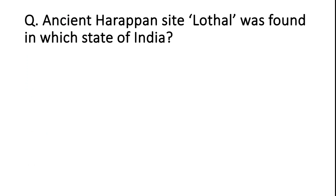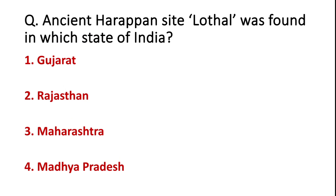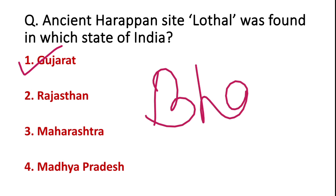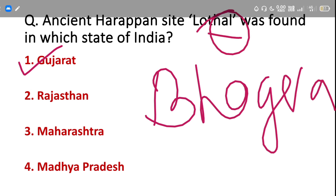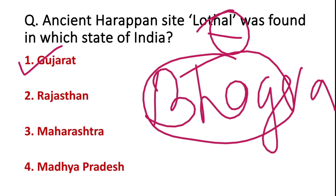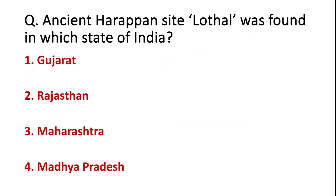The ancient Harappan site Lothal was found in which state of India? Options: Gujarat, Rajasthan, Maharashtra, or Madhya Pradesh. The correct answer is Gujarat. Lothal is located in Gujarat. A related frequently asked question is which river Lothal is found near — the answer is the Bhogwa river. You can remember this with the trick: 'Lothal' — in 'thal' we offer 'bhog,' so Lothal is associated with the Bhogwa river.